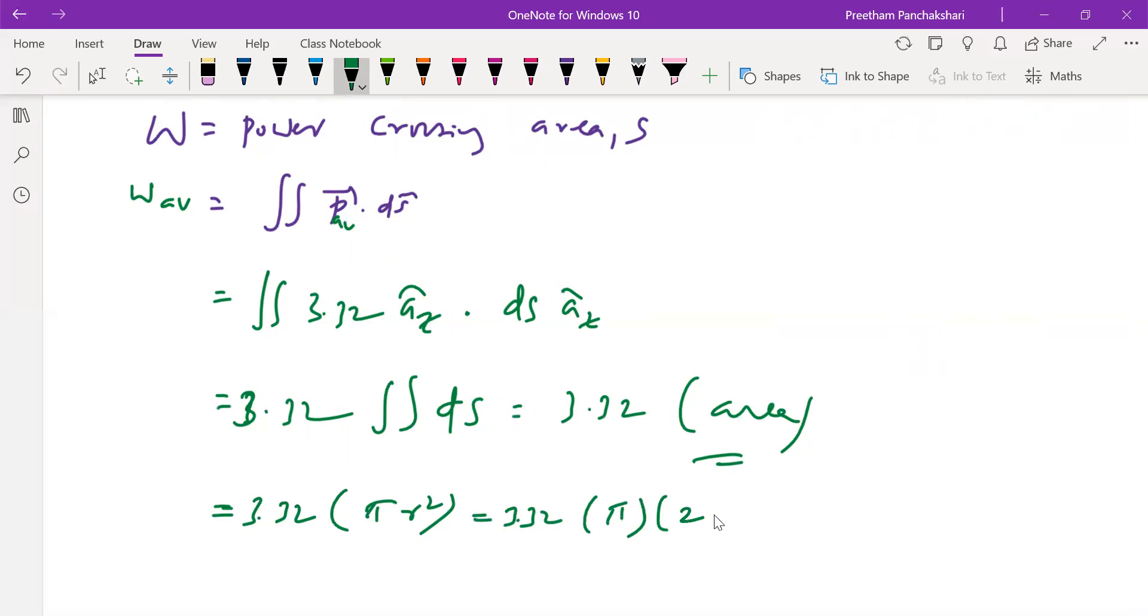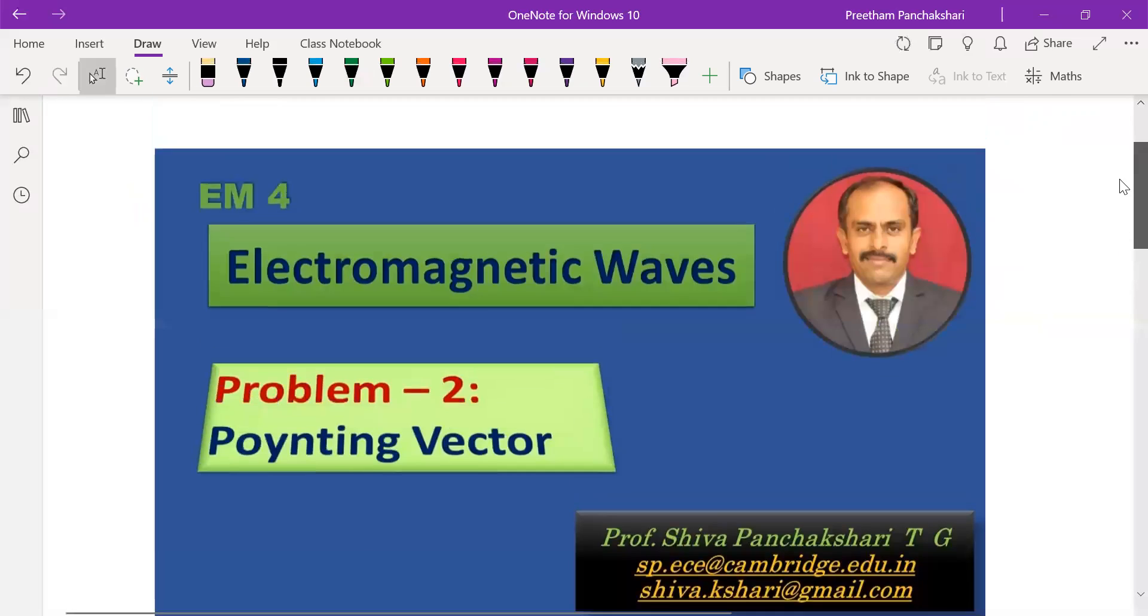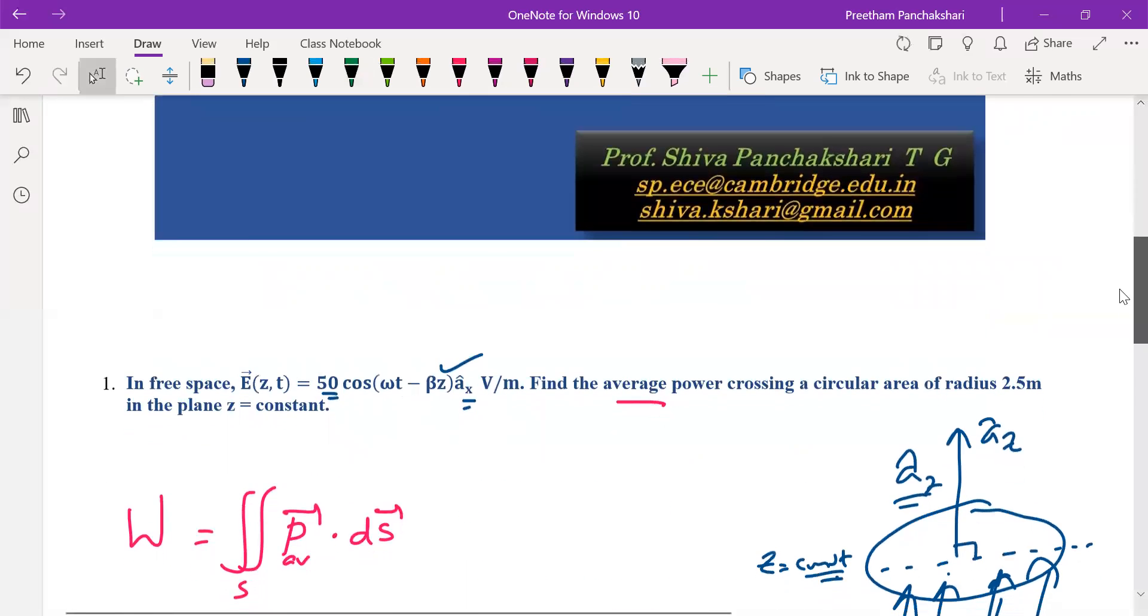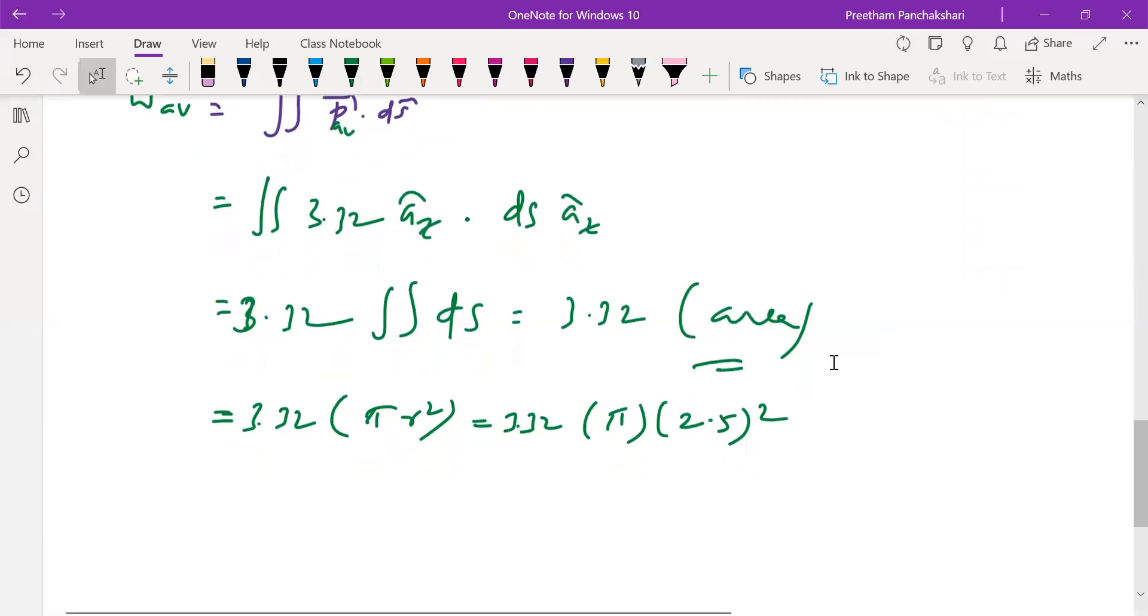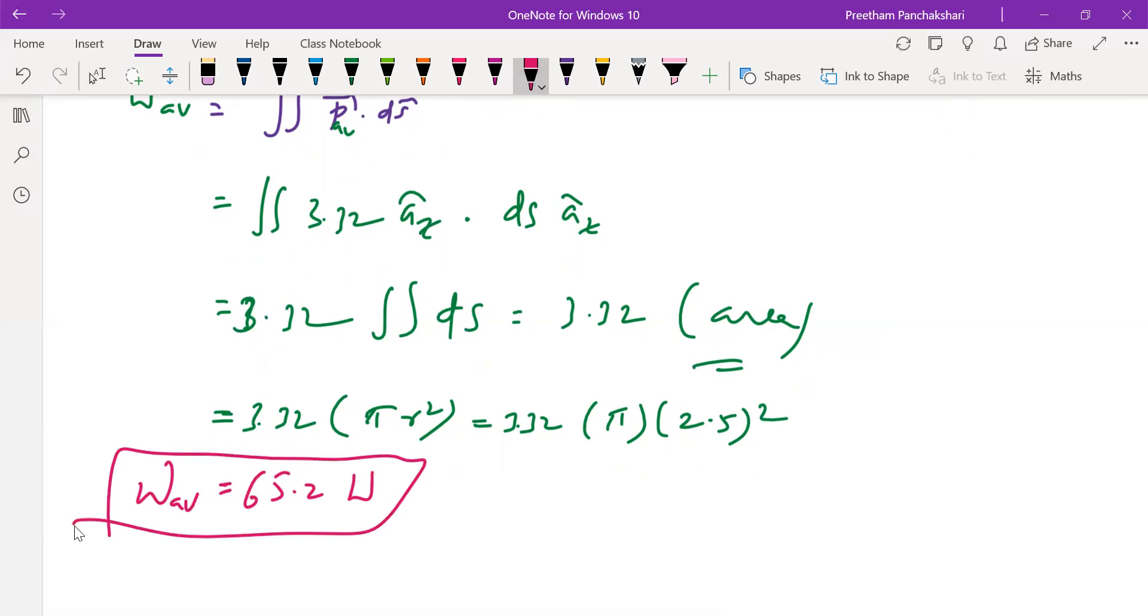We can directly use this in regular calculations: 3.32, area here is circular so pi r square, 3.32 pi, r value I think it is 2.5 meters, let me check on the line what is the radius, it's 2.5. So this gives us 65.2 watts of average power.